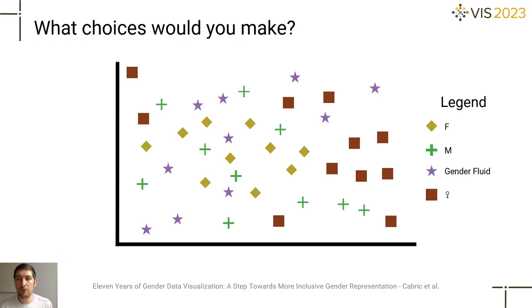In this paper, we looked at gender representation published by practitioners and researchers over the past 11 years and analyzed how they both visually represented and described gender in their visualizations.